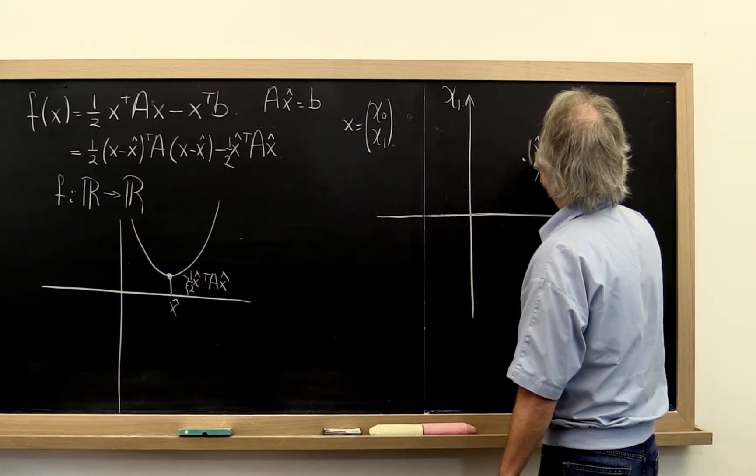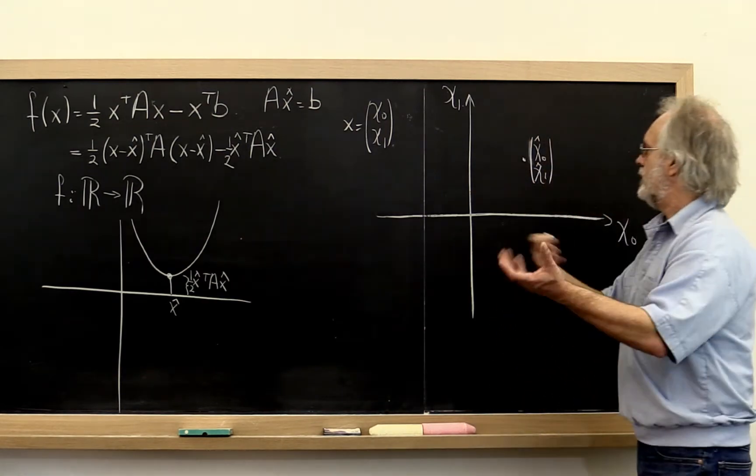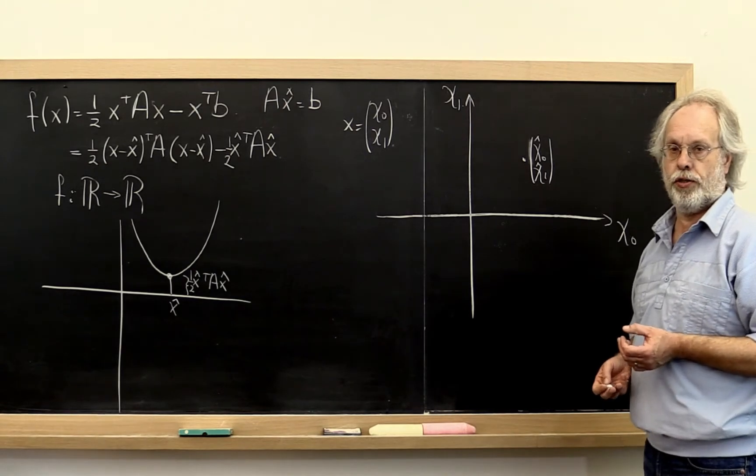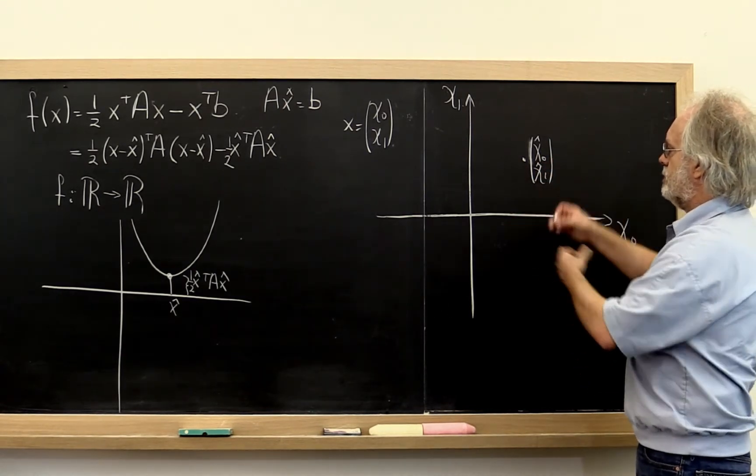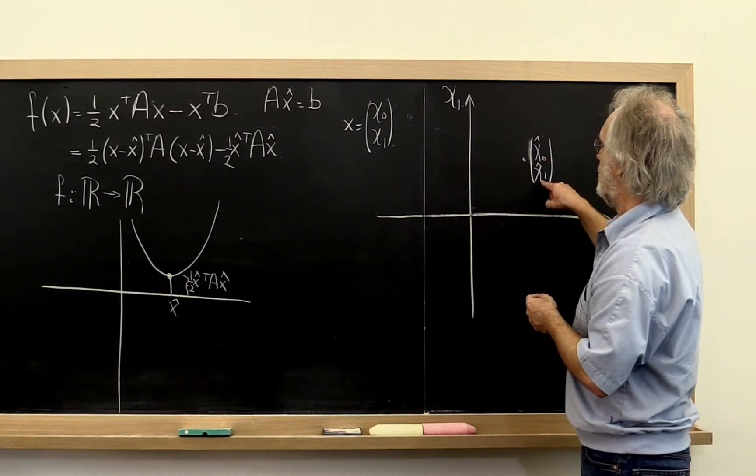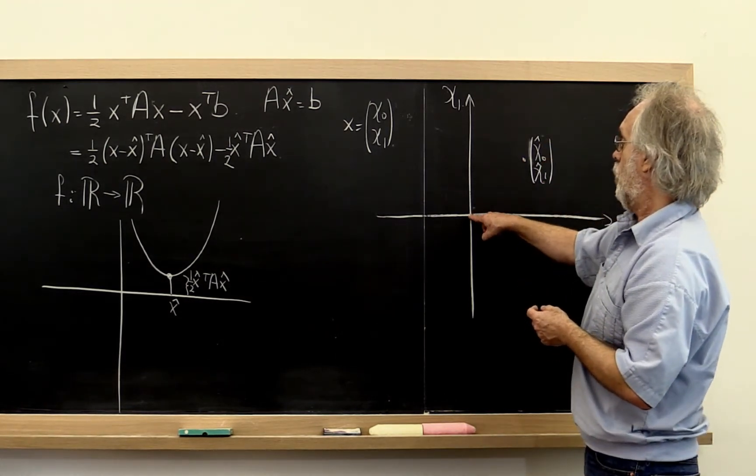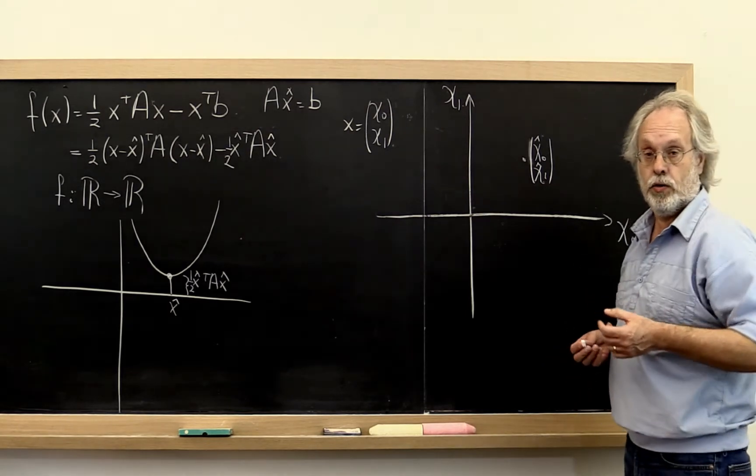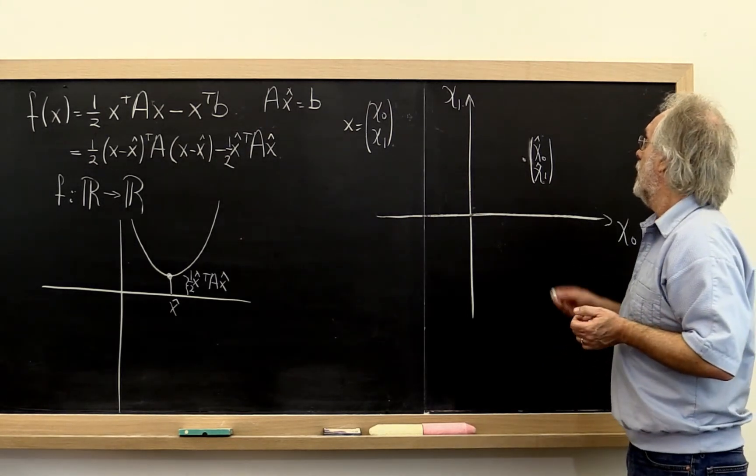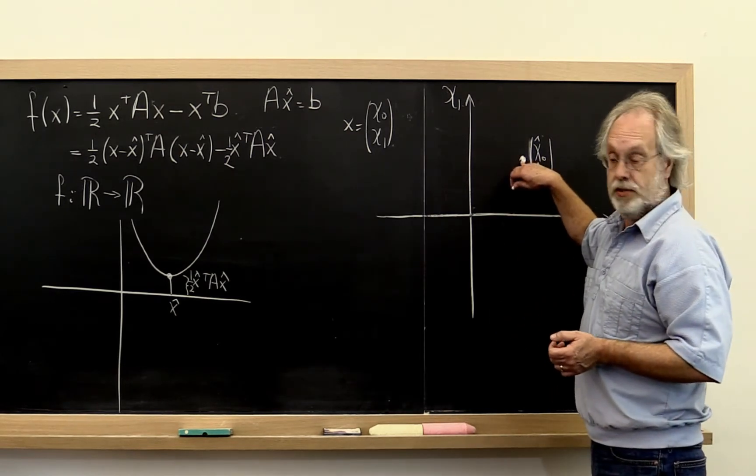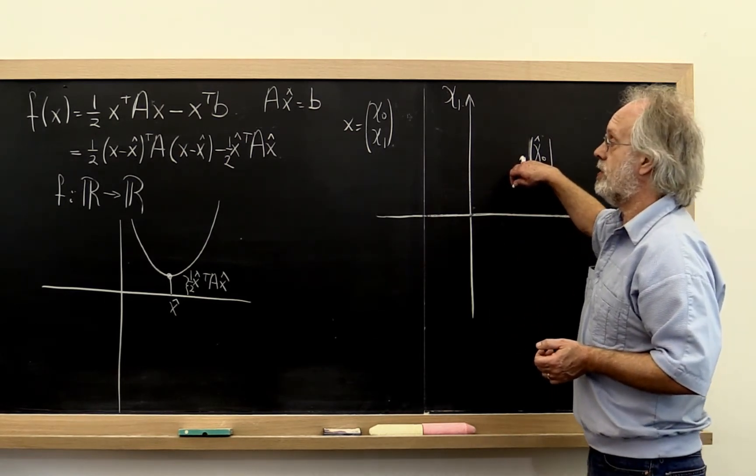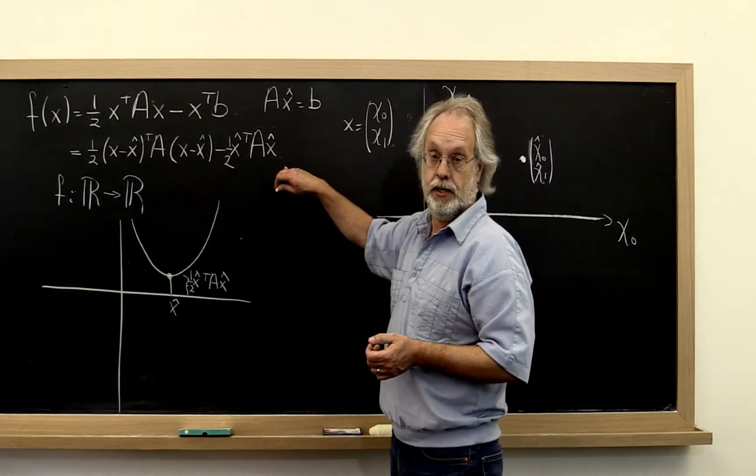So we're just doing this usual going back and forth of are we talking about points in the plane or vectors in the plane. You can think of this as the point to which this vector points when rooted at the origin. And then that's where the minimum happens.